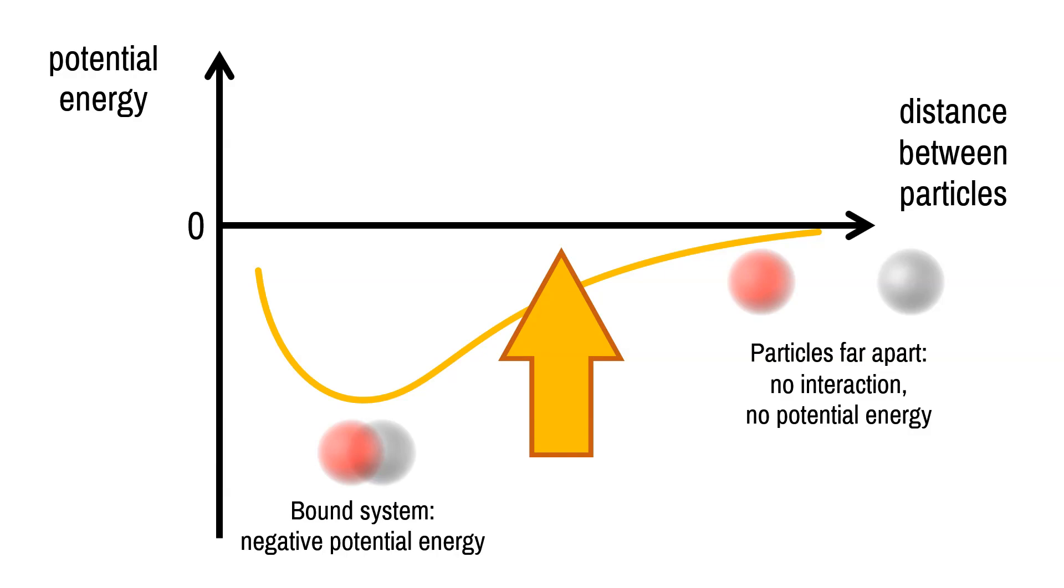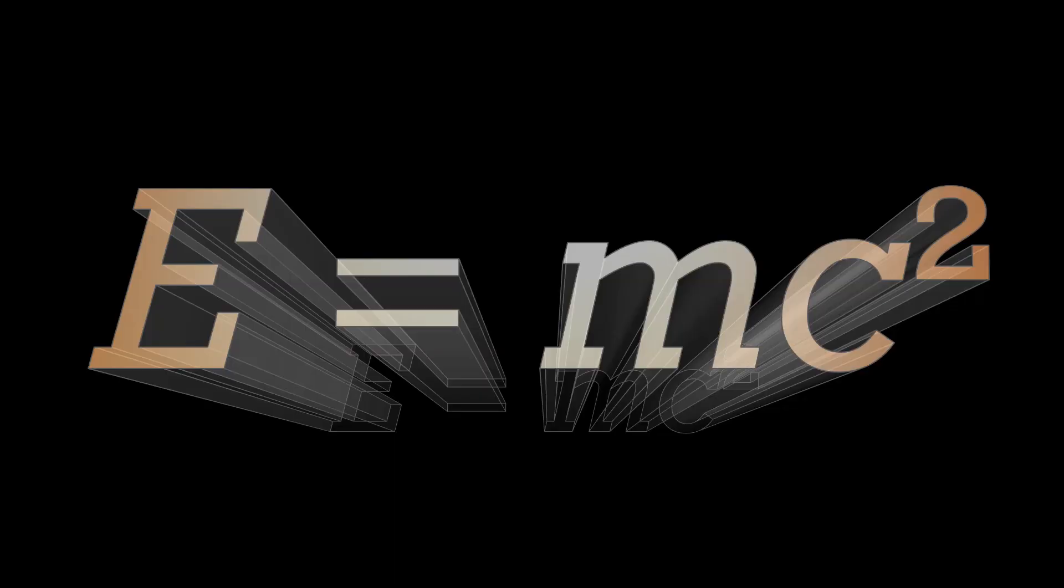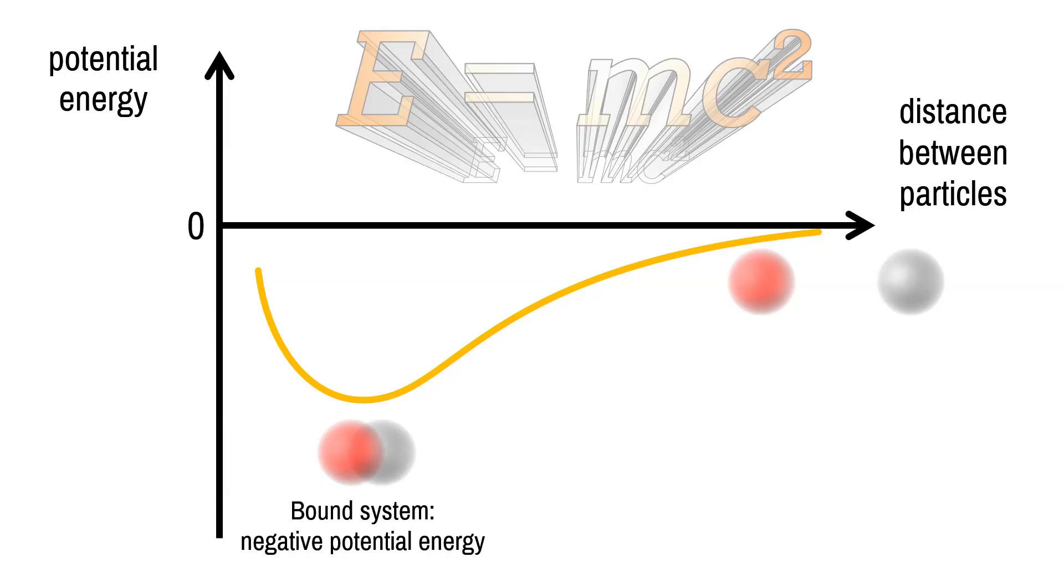Now, according to Einstein, E equals mc squared, energy as mass. So, the negative binding energy of the helium nucleus, or of any nucleus for that matter, is equivalent to negative mass. It decreases the mass of the nucleus.